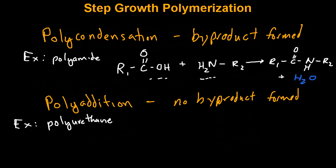An example of polyaddition is the formation of polyurethane, specifically when an isocyanate group reacts with an alcohol. The reaction of these two end groups results in the formation of a urethane linkage, and no small byproduct is formed.